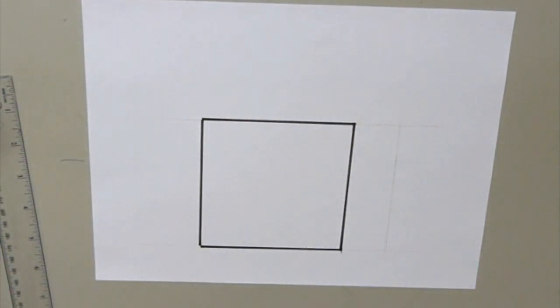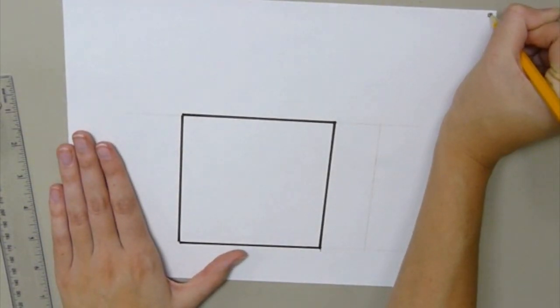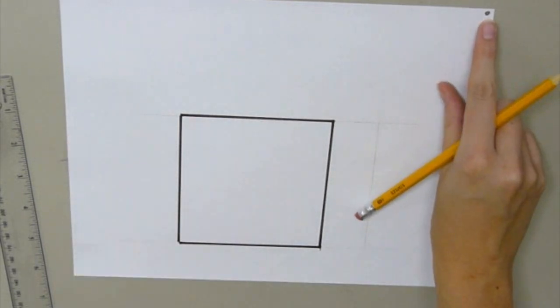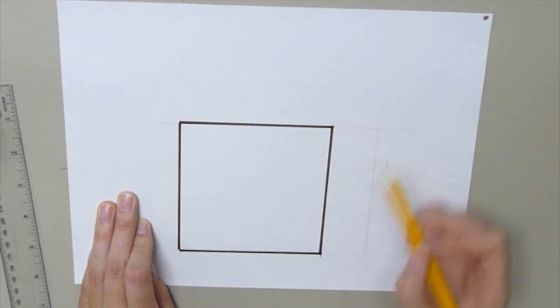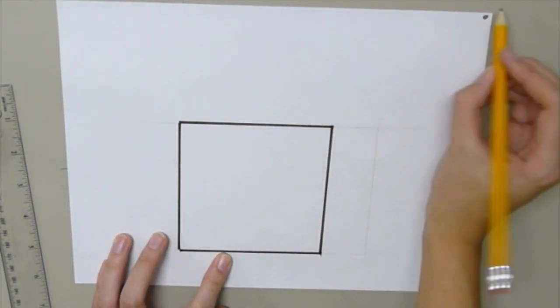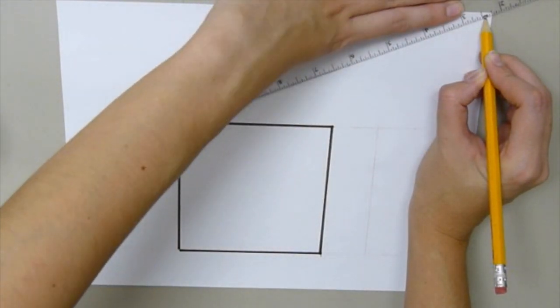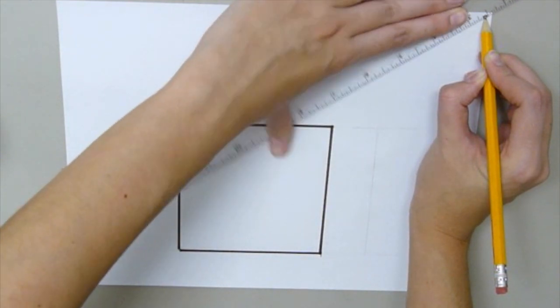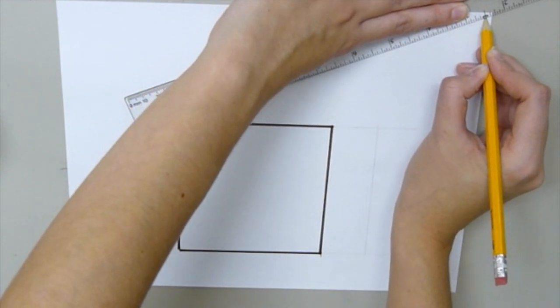The next step is to create our vanishing point. I'm going to take my pencil and I'm going to draw a circle, a little dot in the right hand corner. Now I'm going to take my ruler and I'm going to draw a line from each of my corners of my square to my vanishing point. I like to put my pencil at my vanishing point and my ruler lines up and then I can swing my ruler much easier. I'm going to line it up to the edge of my square.